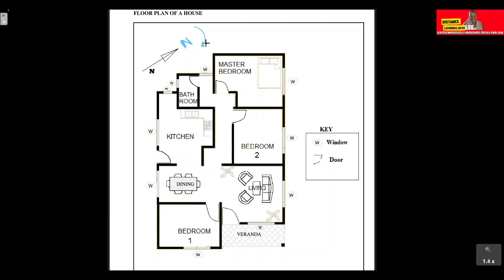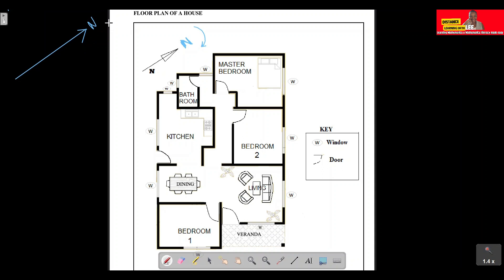We now know our north direction, so we move clockwise to determine east, south, and west. From this we can determine all cardinal directions on the floor plan, and we're ready to analyze the house's layout.